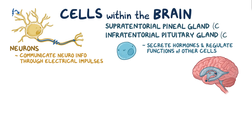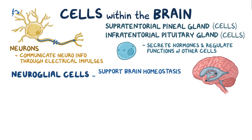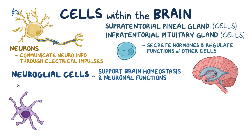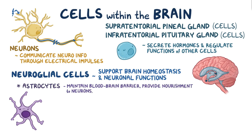There's also a category of cells called neuroglial cells that help support brain homeostasis and neuronal functions. These include astrocytes, which have cellular processes coming off their cell body, giving them a star-shaped appearance. Astrocytes are found throughout the brain and spinal cord, and their main roles include maintaining the blood-brain barrier, providing nourishment to neurons, and recycling neurotransmitters.